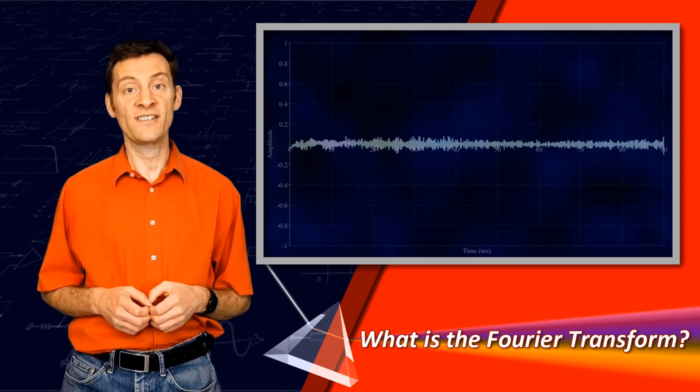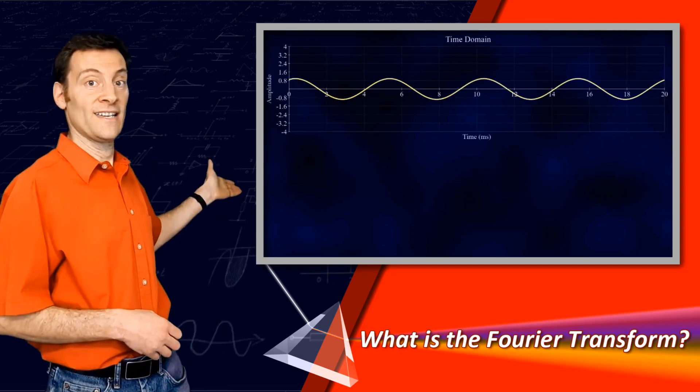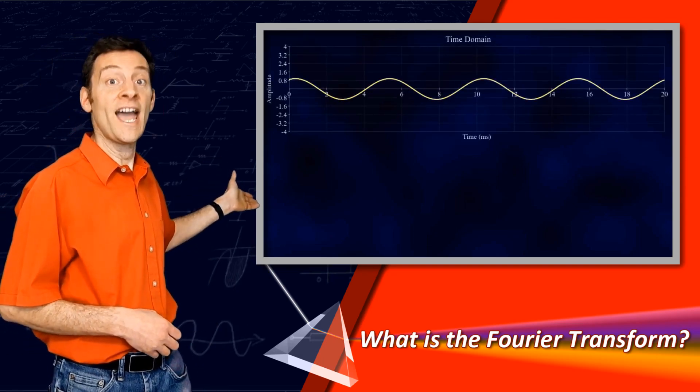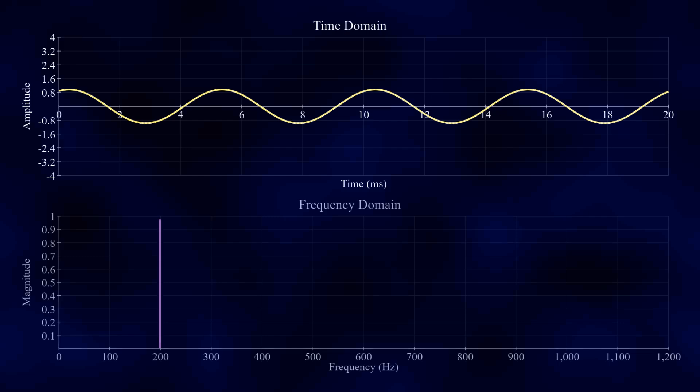Let's begin with a single sinusoid. Here it is in the time domain. And here it is in the frequency domain, represented as a single line. The height of the line on the y-axis tells us its magnitude. And the position of the line on the x-axis tells us its frequency.